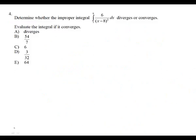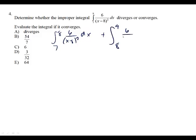Let's do number 4 — this is a converges/diverges problem. It is an improper integral. Why is it improper? Where's the vertical asymptote? At 8. So I need to split it at 8. We split from 7 to 8 of 6 over (x minus 8) squared, DX, plus from 8 to 9 of 6 over (x minus 8) squared, DX.